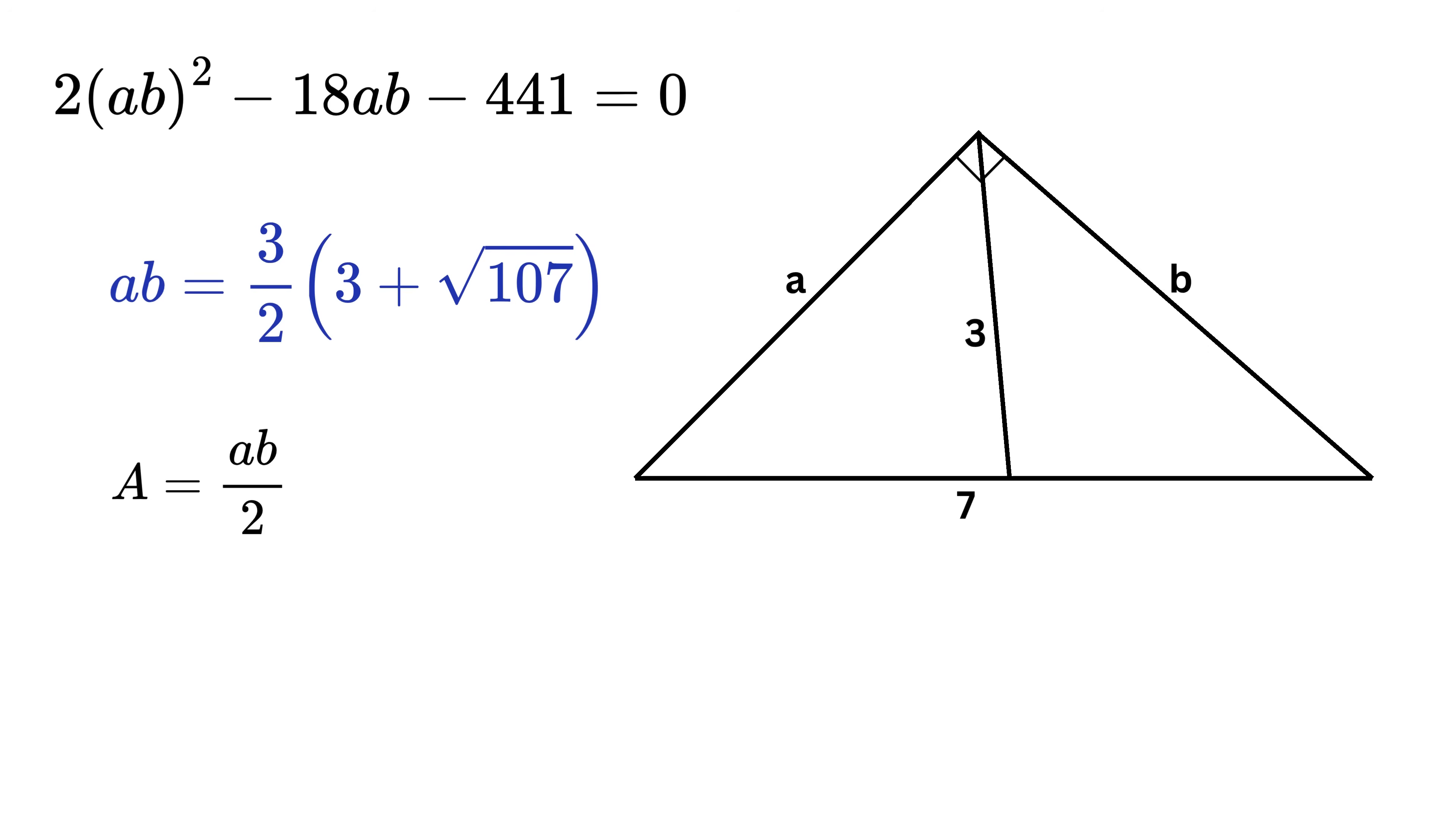So we are left with AB equals this. Now the area of this right triangle is half of AB, and thus it will be 3 by 4 times 3 plus square root of 107 square units. And that's it. This is our final answer.